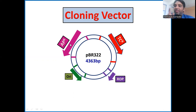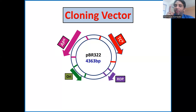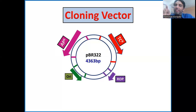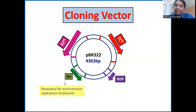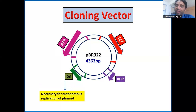The ampicillin resistance gene encodes beta-lactamase, which is able to degrade or hydrolyze ampicillin into penicillinic acid. So whenever E. coli carries pBR322, it produces beta-lactamase and can grow in the presence of ampicillin. The last feature is the unique restriction sites, which are present within the genetic selection markers.